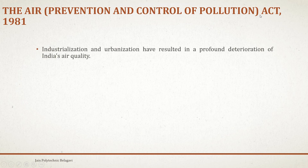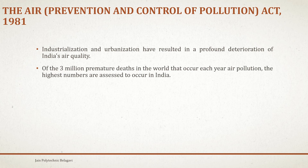The Air Prevention and Control of Pollution Act was released in 1981. Industrialization and urbanization have resulted in a profound deterioration of India's air quality. Because India is a developing country, we have been urbanizing and industrializing cities, reducing air quality. Of the three million premature deaths in the world that occur each year due to air pollution, the highest numbers are assessed to occur in India.